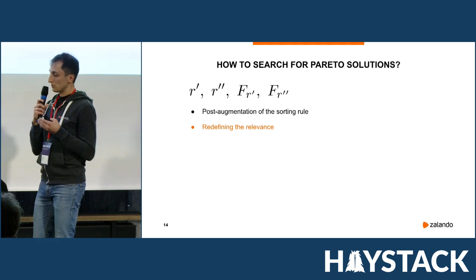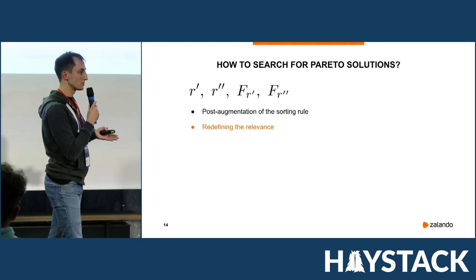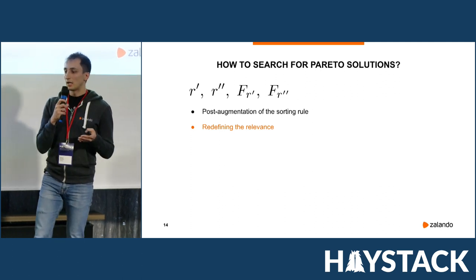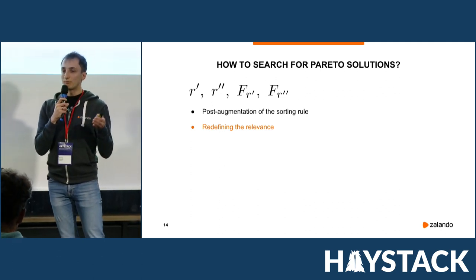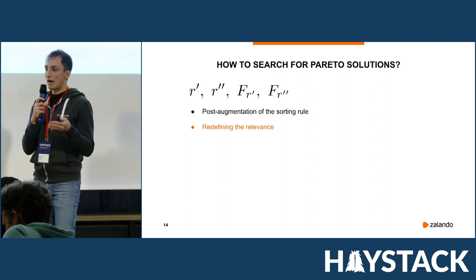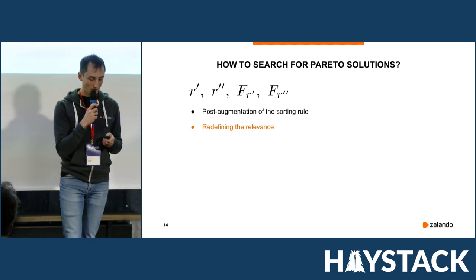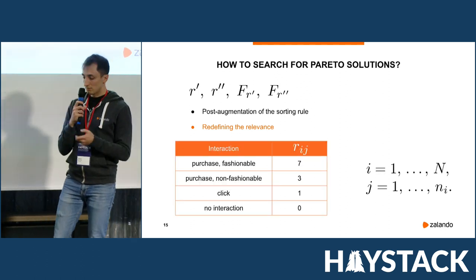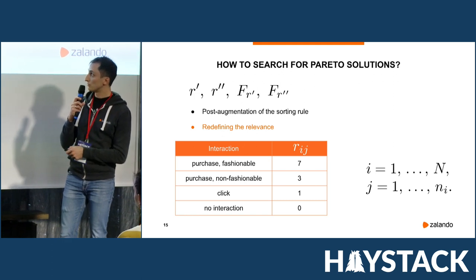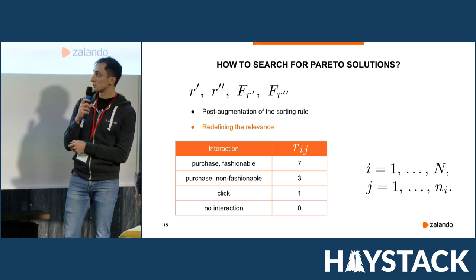The other thing we can do is to redefine our relevance — defining a new relevance that takes into account both user interactions and the fashionability of items. For example, we may assign different relevances to fashionable and non-fashionable articles when they are purchased.